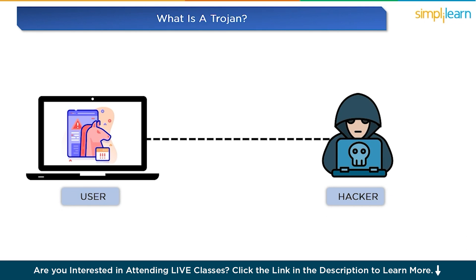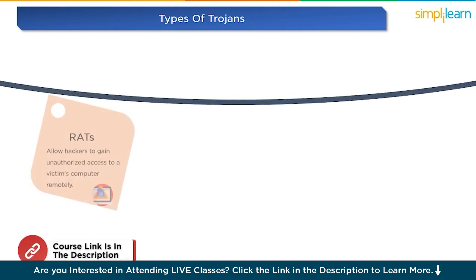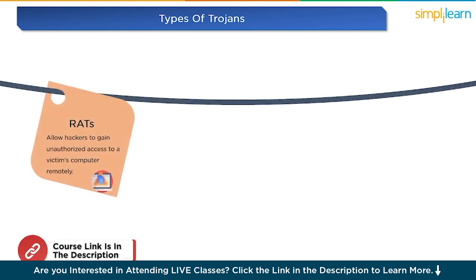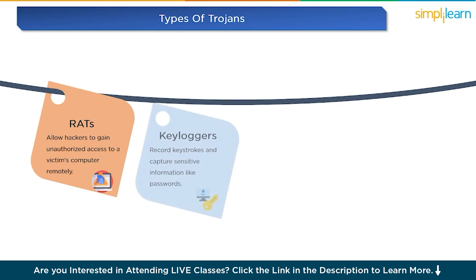Now that we know the basics, let's look at the different types of Trojans out there. The first one is Remote Access Trojans, or RATs. These sneaky Trojans allow hackers to gain unauthorized access to a victim's computer remotely. They can spy on users, steal sensitive data, and even control the infected system.